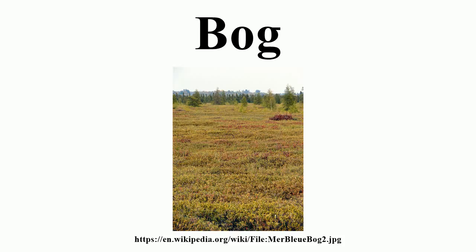Raised bogs develop from a lake or flat marshy area, over either non-acidic or acidic substrates. Over centuries there is a progression from open lake, to marsh, then fen and carr, as silt or peat fills the lake. Eventually peat builds up to a level where the land surface is too flat for ground or surface water to reach the center of the wetland. This part therefore becomes wholly rain-fed, and the resulting acidic conditions allow the development of bog. The bog continues to form peat, and over time a shallow dome of bog peat develops. In a raised bog, the dome is typically a few meters high in the center, and is often surrounded by strips of fen or other wetland vegetation at the edges or along stream sides, where ground water can percolate into the wetland.